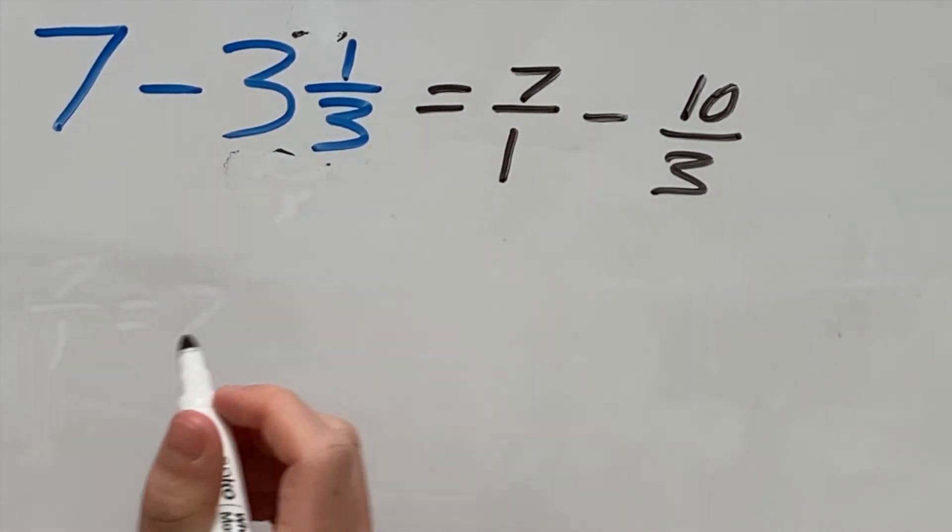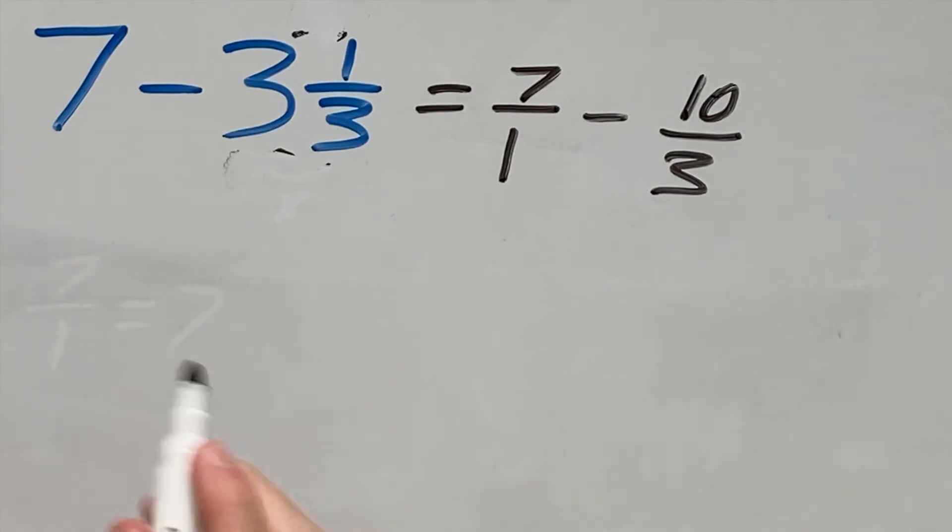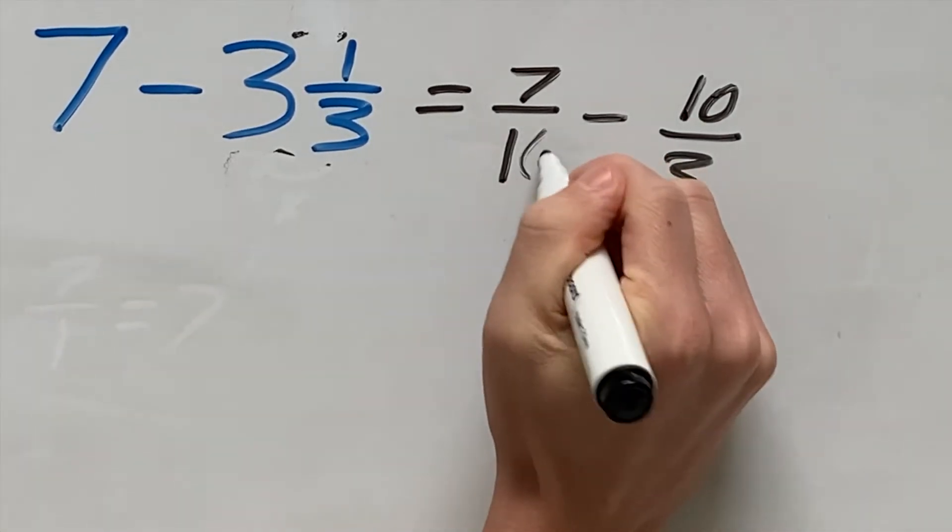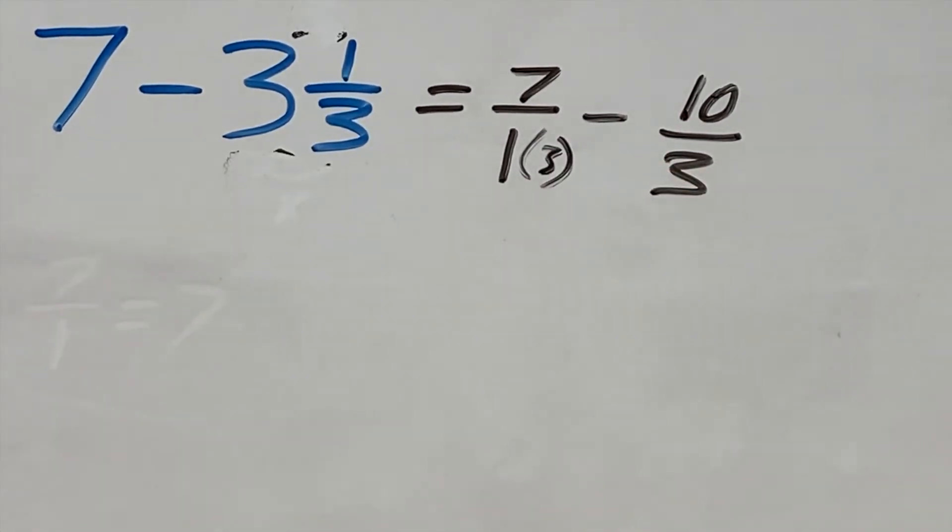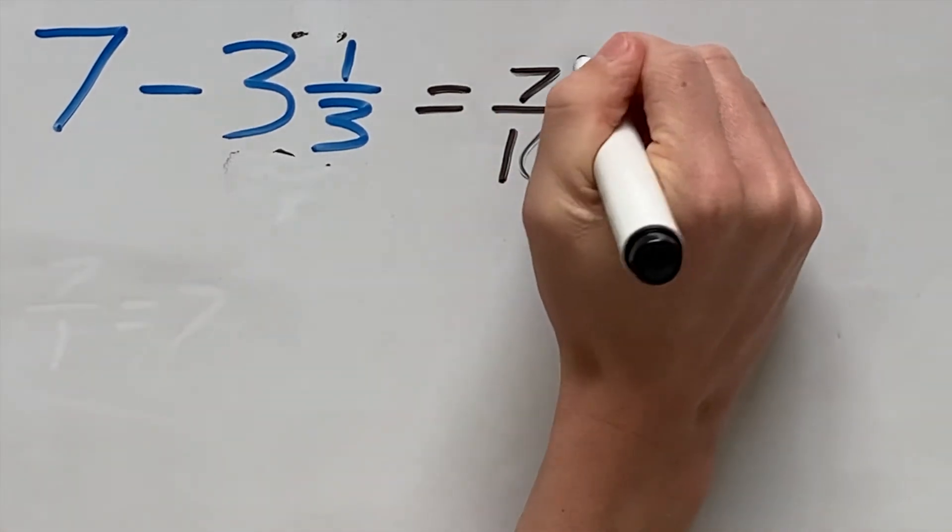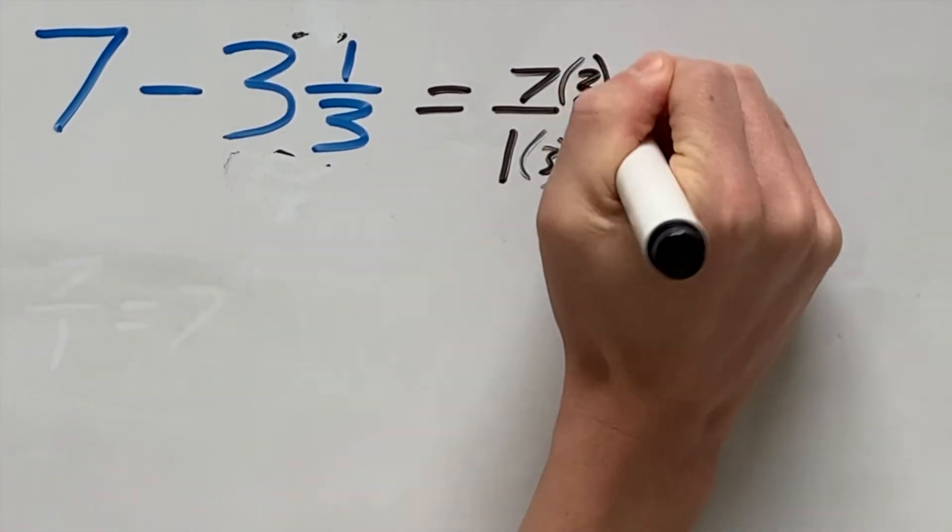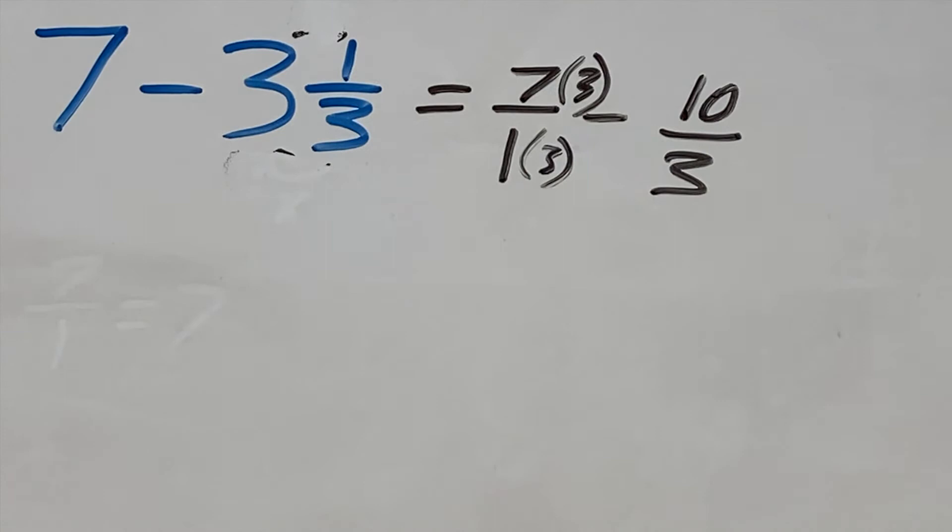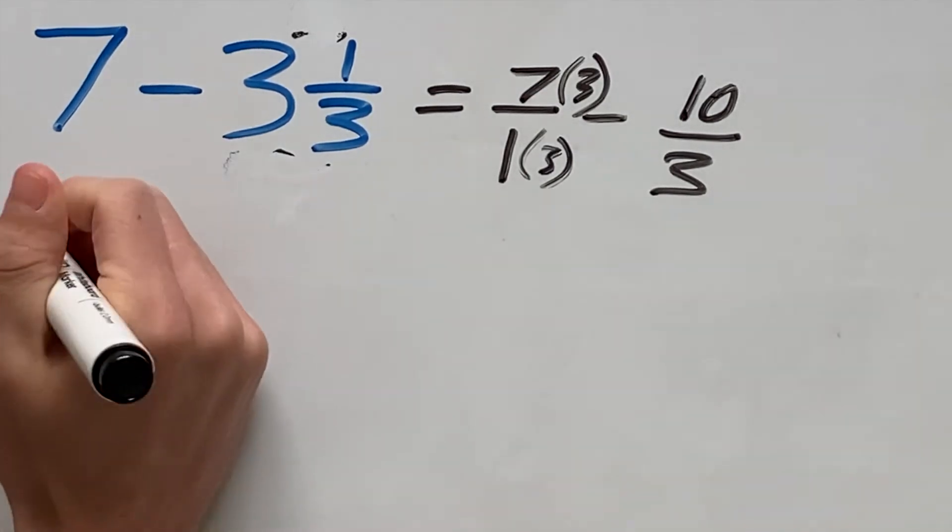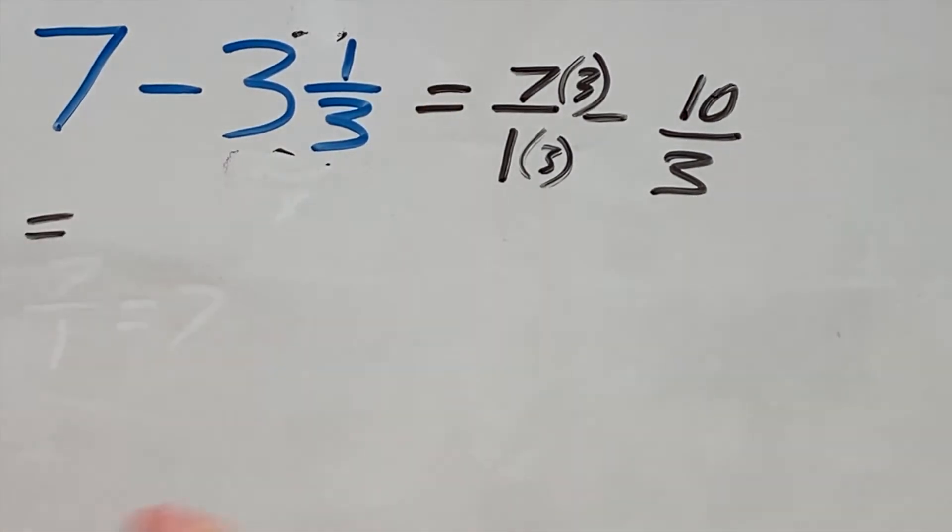If we rewrite this to get 7 over 1 with a denominator of 3, we need to multiply the 1 down the bottom by 3. And whatever we do to the bottom, we also must do to the top. That means we multiply the 7 by 3 as well.